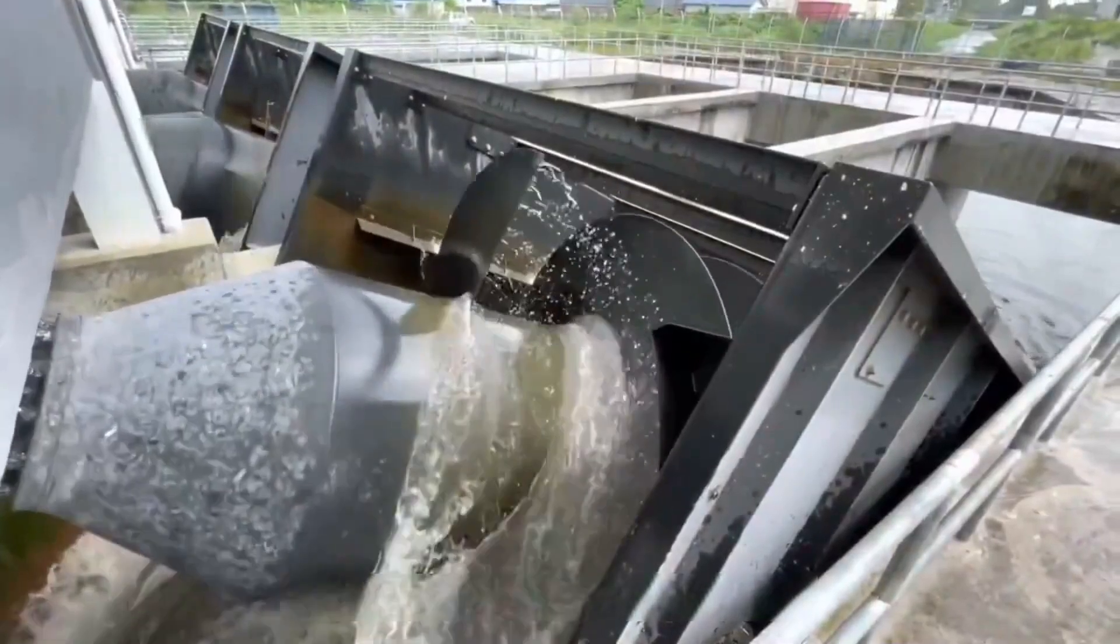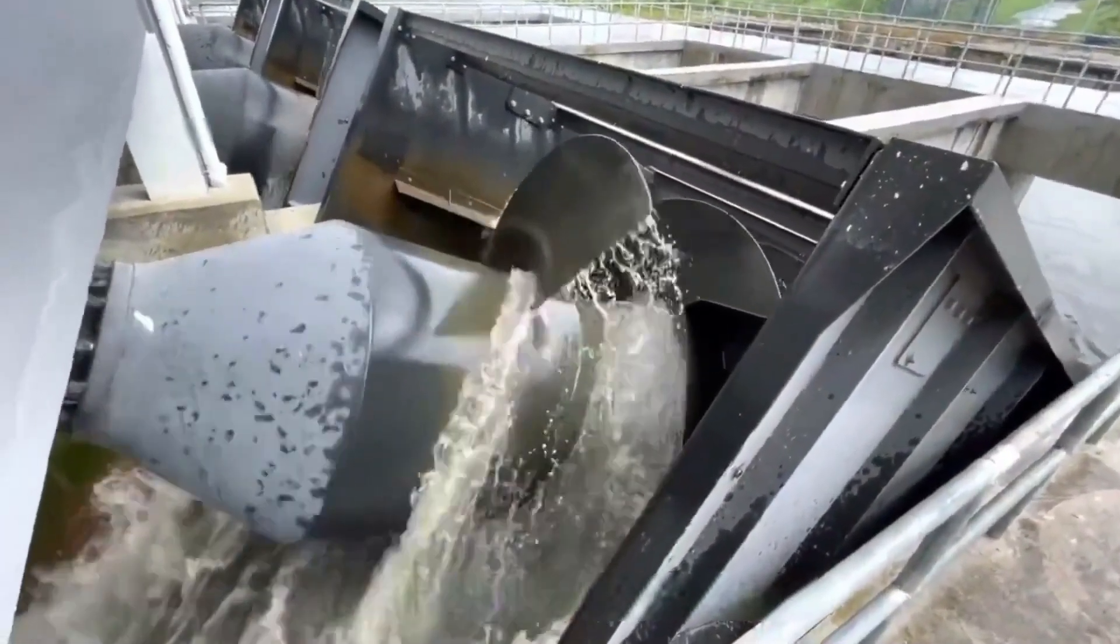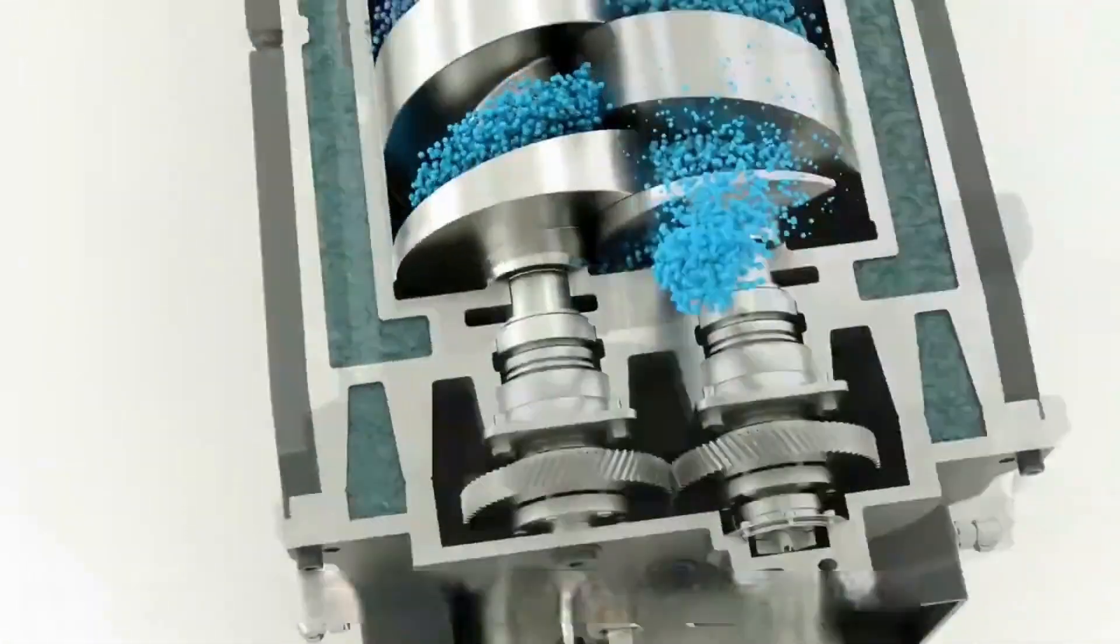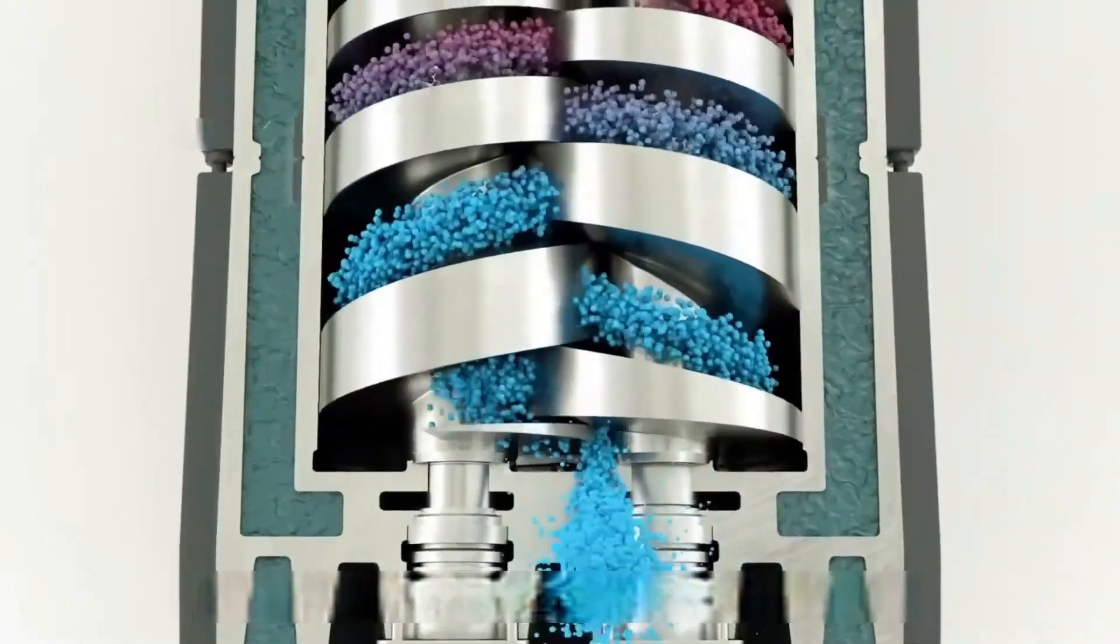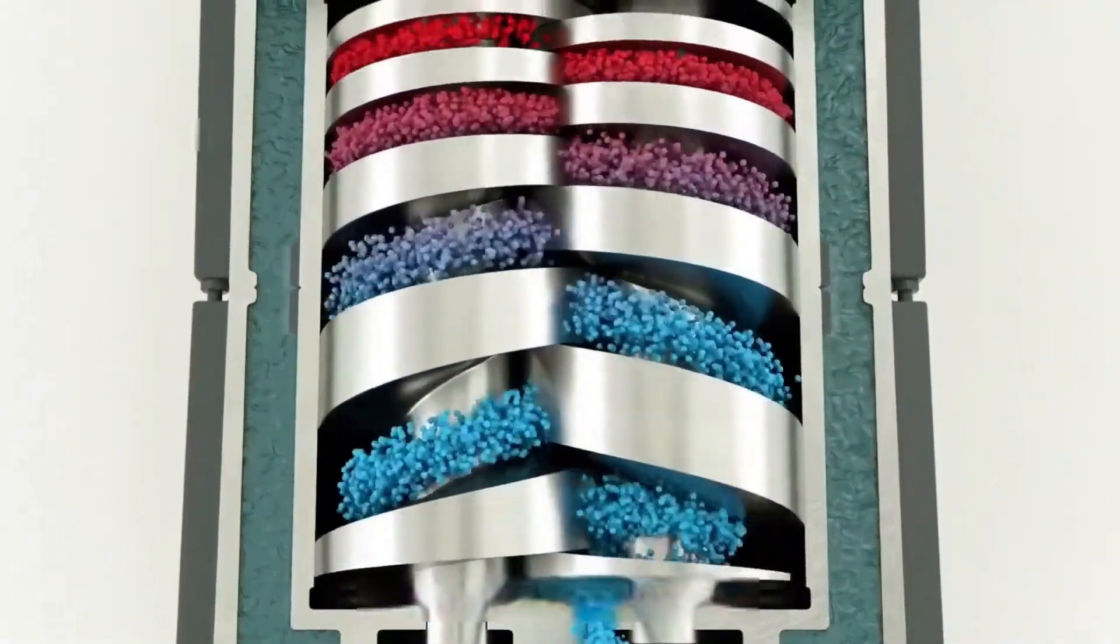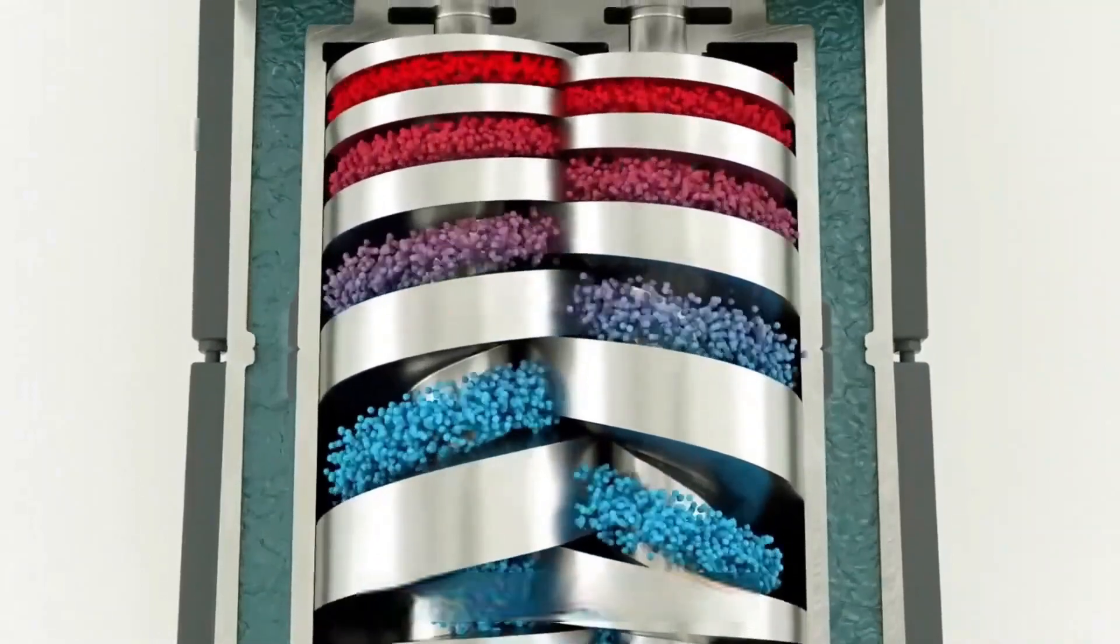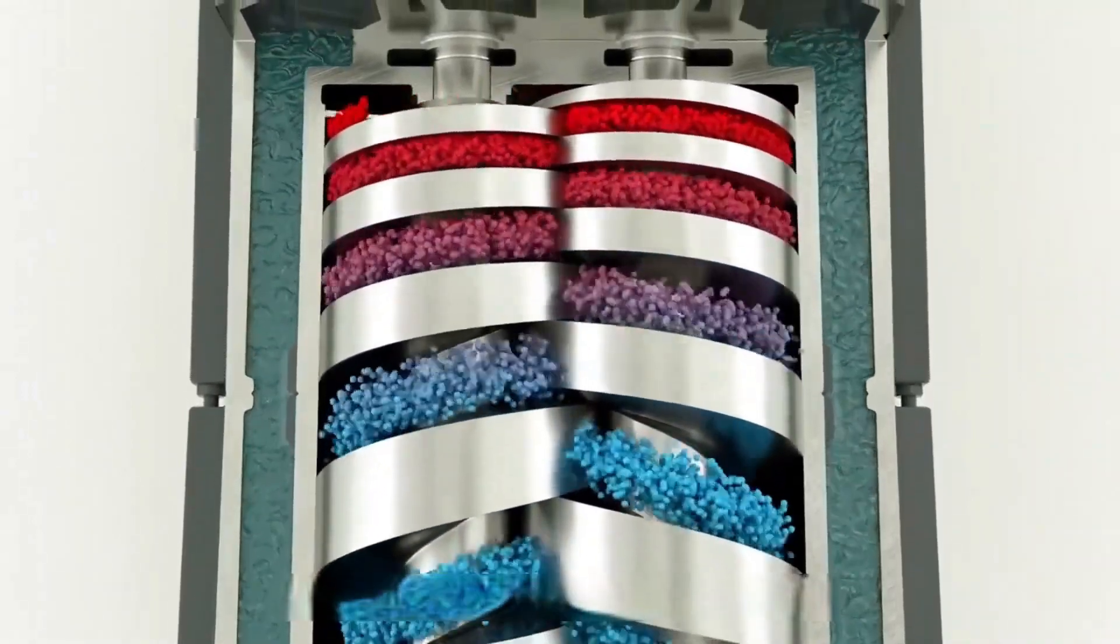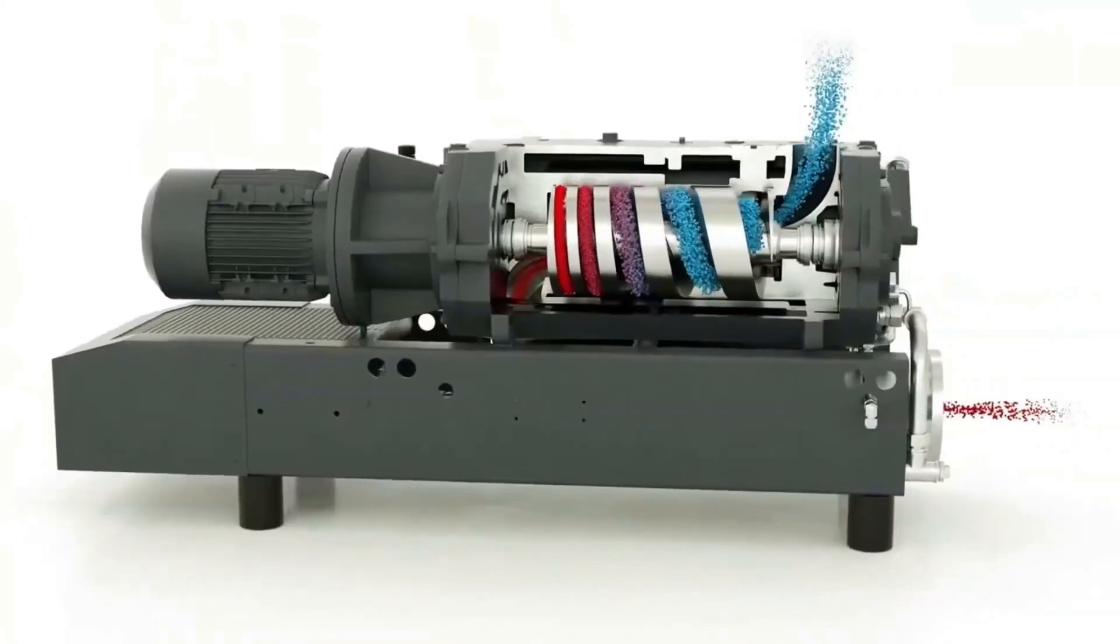The screw pump is a modified version of the Archimedes screw. It's also known as a progressive cavity pump. It is a volumetric pump that utilizes the rotation of the screw vanes to make the fluid spiral up along the shaft.